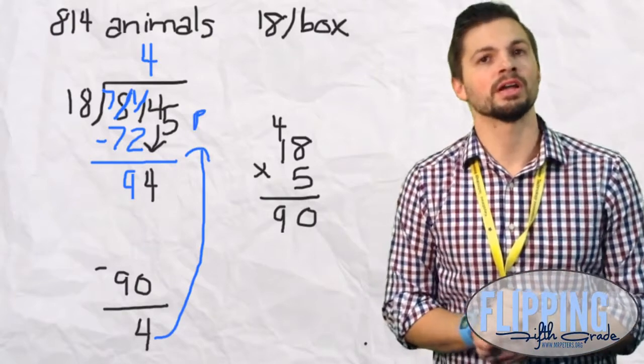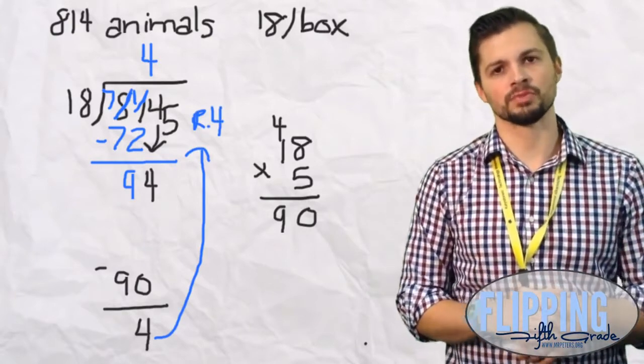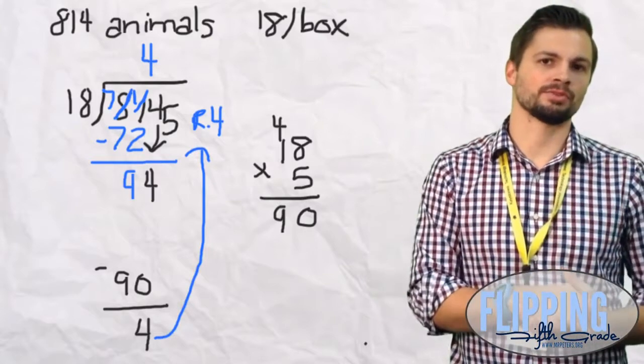So our answer is 45 remainder 4. Is that answer close to 40? Yes, it's close enough. So now we have to go back to the original problem.